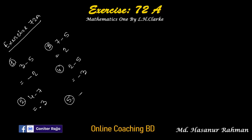Number five says minus 3 minus 4. Look at the sign of 3 and the sign of 4 — both are the same, both are negative. For that reason we have to add: 3 plus 4 is 7. And the symbol of 3 and 4 is negative, so we put a negative sign at the result: minus 7.